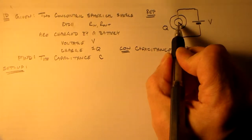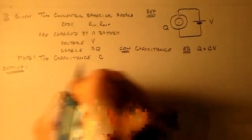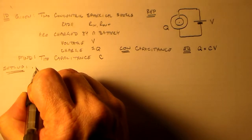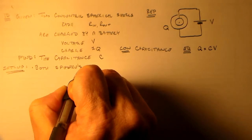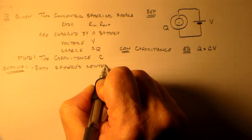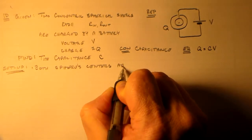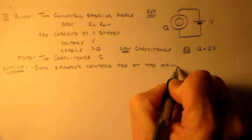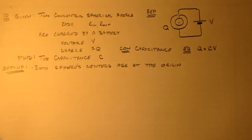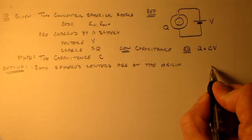And that's just to say, the easiest thing is to set this up so that both spheres are at the origin. Both spheres' centers are at the origin. Okay? So this is what we have to work with, and it's not going to be exceedingly difficult, right?